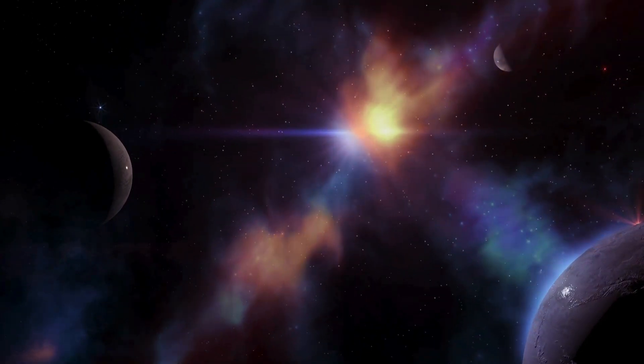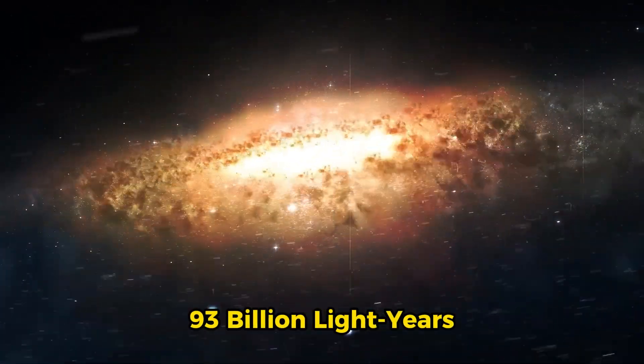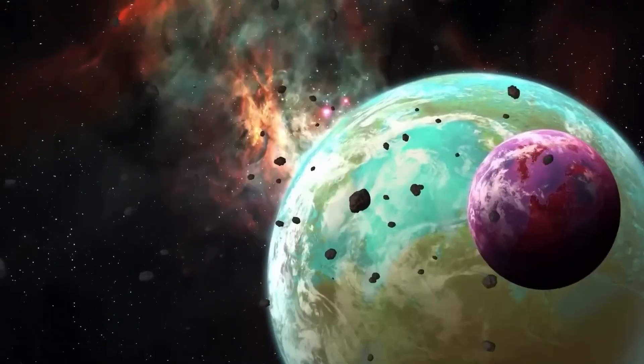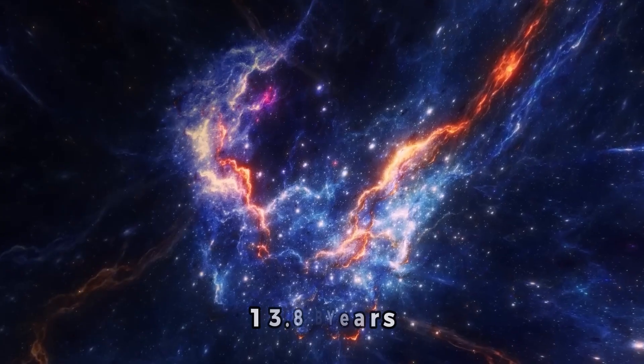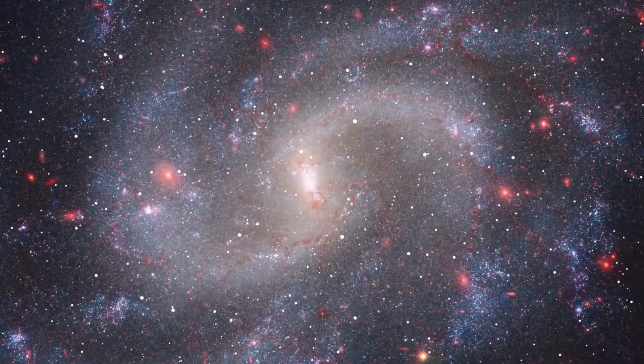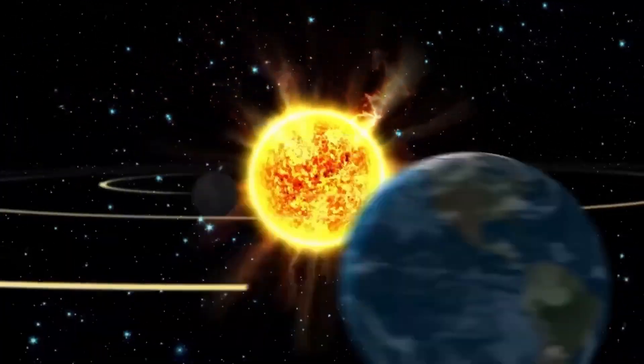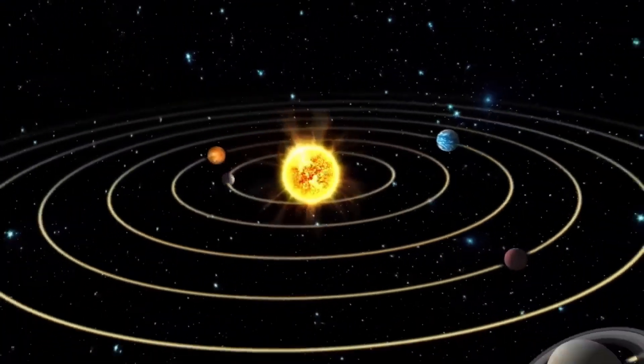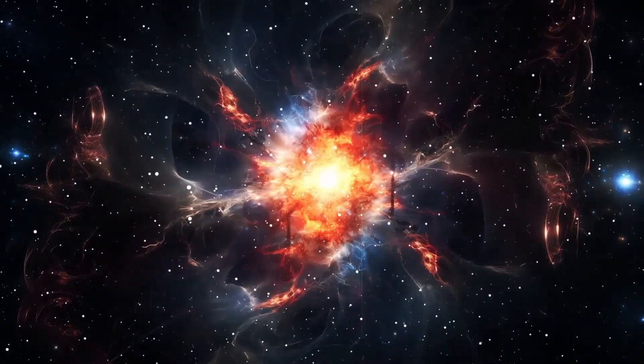The estimated diameter of the observable universe is approximately 93 billion light years, which is significantly bigger than the estimated age of the universe, which is 13.8 billion years. The universe's expansion has forced objects to move farther apart, which has generated a disparity in the time it takes for light from those objects to reach us.